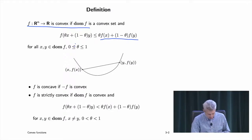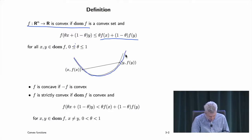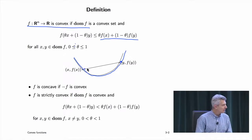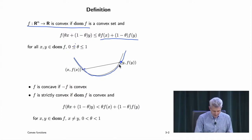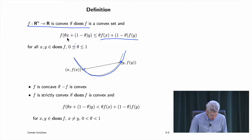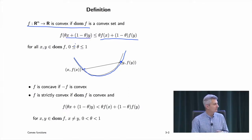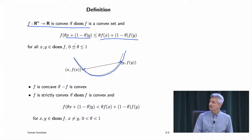Geometrically, if you have the graph of f, it says the chord — a very old term for the line segment in graph space going from (x, f(x)) to (y, f(y)) — the graph of f lies below its chord. That's the very old way to talk about convexity.